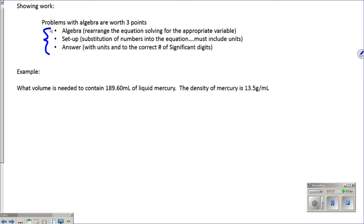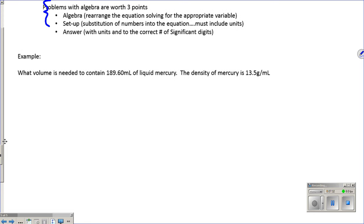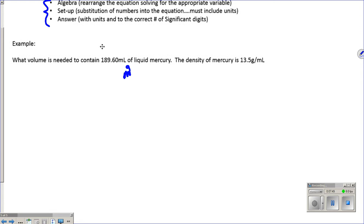Before you do the mathematics, you must do your algebra. So you have to rearrange the equation for the variable that you're solving for. The second point is going to be the setup. That is the substitution of numbers into your new equation, and that must include units. And then the third point is the answer. With that answer, you have to have the proper units and the correct number of significant digits. So here's an example here. It says what is the volume? What volume is needed to contain 189.6 grams of liquid mercury. Mercury is a metal, and it is the only metal that is not solid at room temperature. It is a liquid. And it says the density of mercury is 13.5 grams per milliliter.